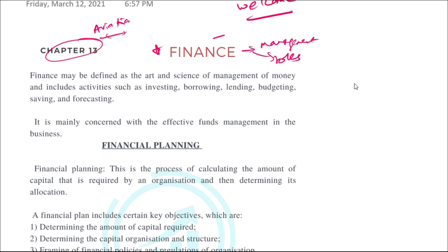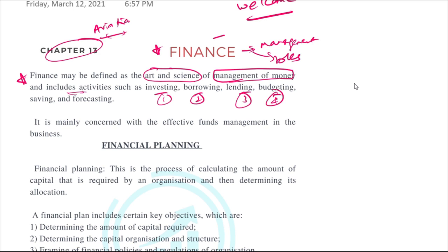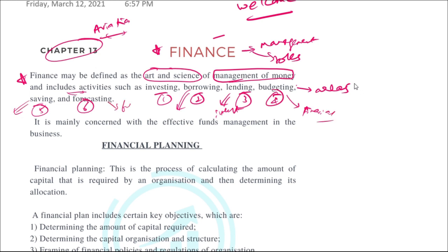Finance can be defined as both an art and a science — the management of money including the activities of investing, borrowing, lending, budgeting, saving, and forecasting. These are the important areas where finance has to focus: where to invest, from where to borrow if there's a shortage, lending money to earn interest, making appropriate budgets, deciding how much to save, and forecasting future money needs.